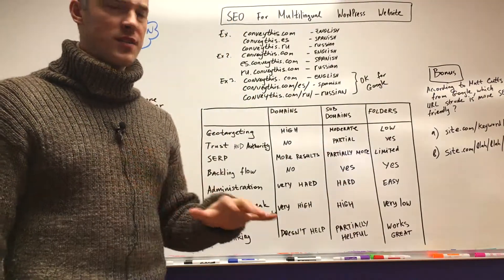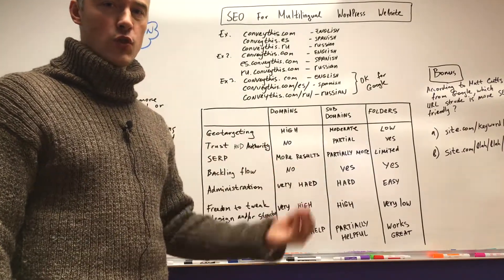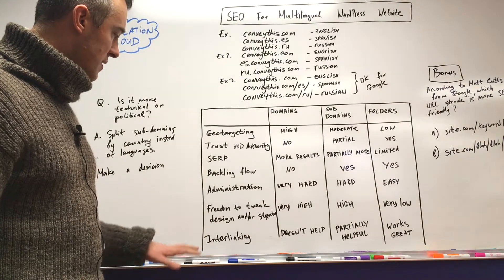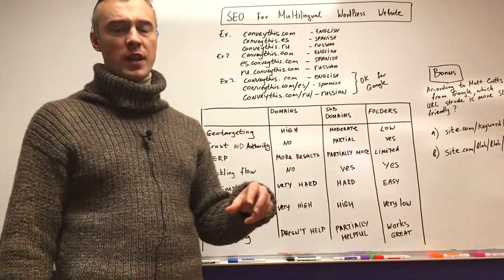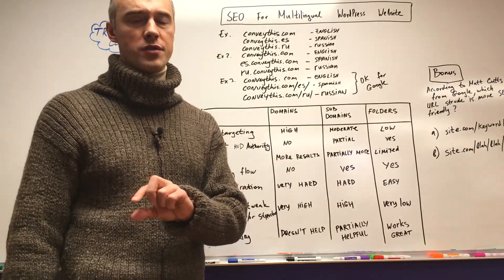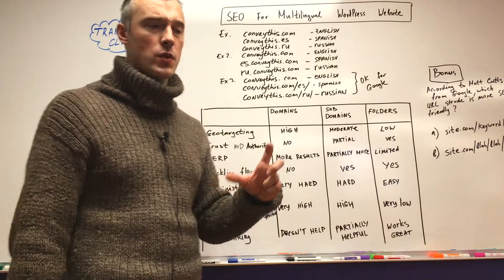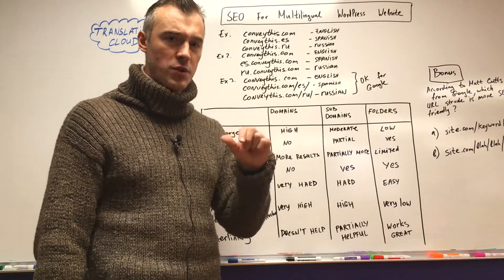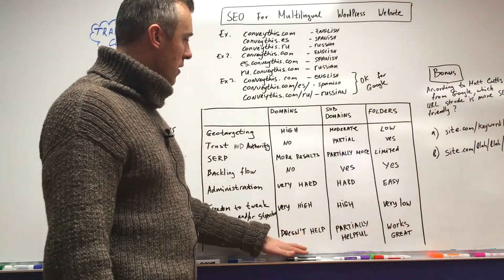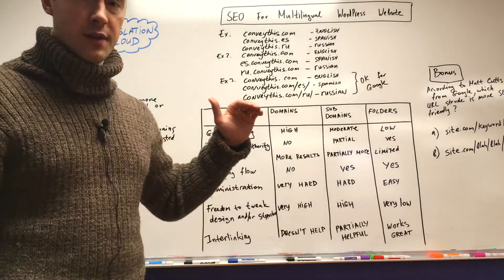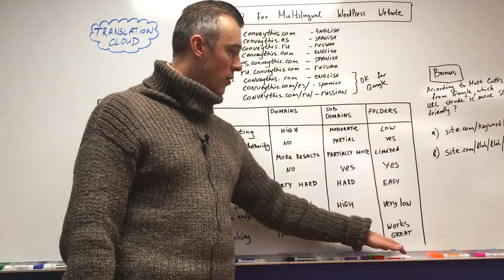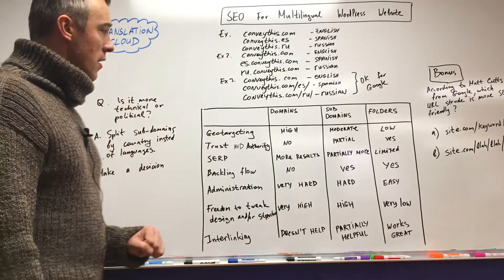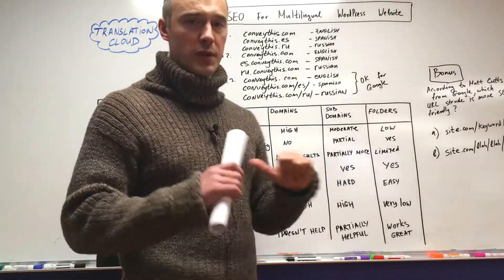Think of separate domain websites as totally independent — you're maintaining new websites with full control over updating, removing, and changing pages. The final point is interlinking: linking from one language version to another, for example through a common footer or a header dropdown menu with language flags. For the domains approach, since these are three different websites, interlinking doesn't help. For subdomains and folders it works great, especially for folders.